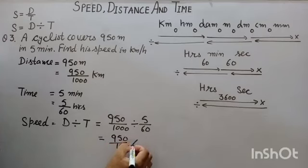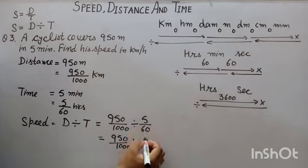Divide will change to multiply, and we will take reciprocal here: 60 by 5.